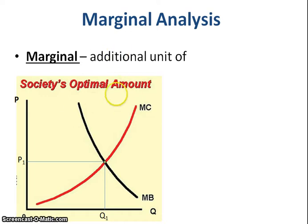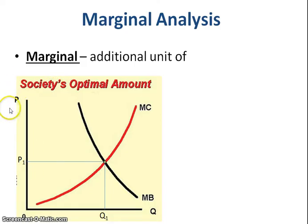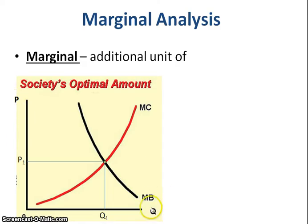This is one of the first graphs we're looking at for this class. The vertical axis is labeled with a P for price and the horizontal axis is labeled Q for quantity. That's going to be pretty standard throughout — we might use dollars per unit, but otherwise we'll go with these same labels.